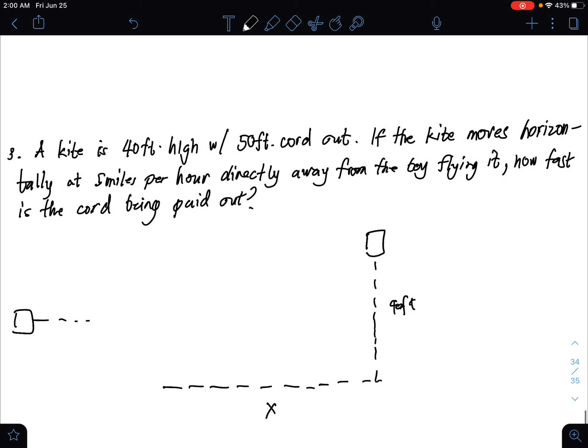If the kite moves horizontally, the kite moves with the wind horizontally. Let X be the horizontal distance. The kite moves at 5 miles per hour. That would be, since it's horizontal, dX over dt, which is 5 miles per hour. We have 40 feet, X, and then there's the person flying the kite.